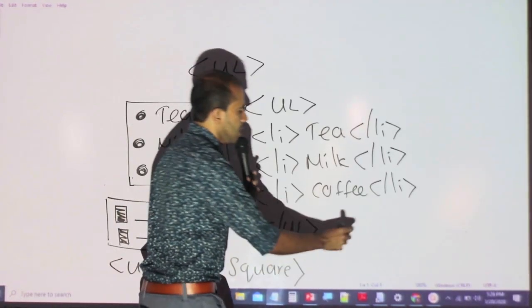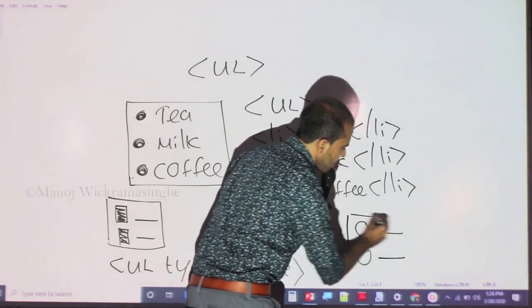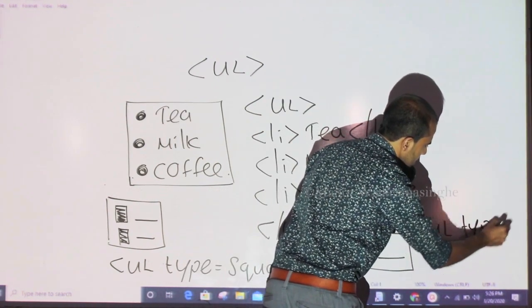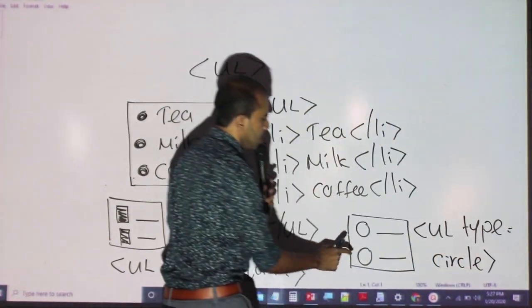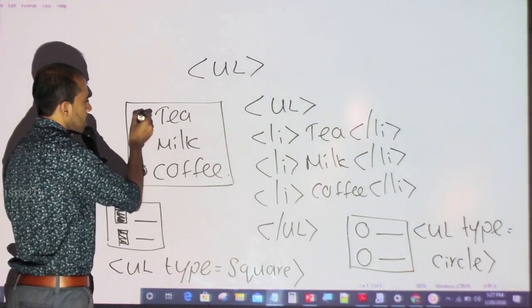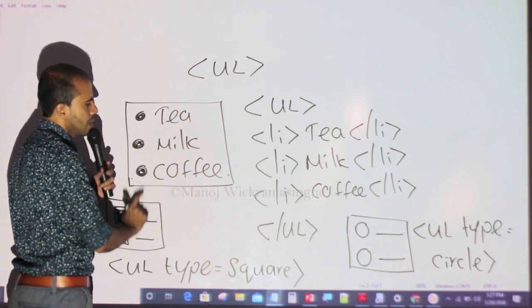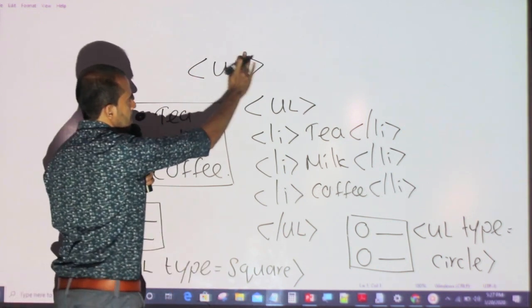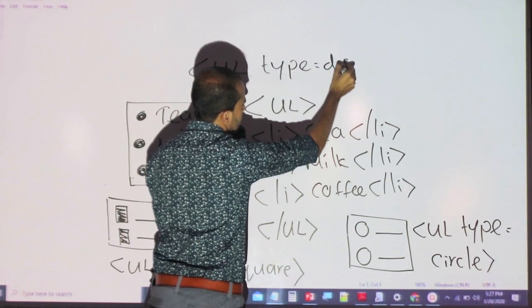If you want to see this list, you can see it in the circle. You can see it in the circle. C I R C L E. If you want to see some of the points, you will see the list in the circle. You can see it in the circle. You can see the type — F C D I S K.